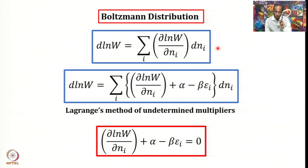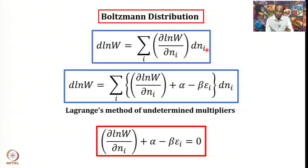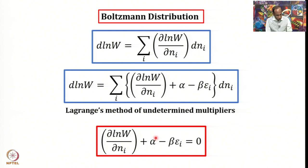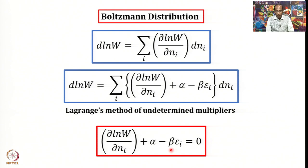This is an important step of the recap. We set the derivative of log W equal to zero. However, we cannot simply treat either the bracketed term or dNi equal to zero independently, because they are not independent of each other. Then we brought in a very important method: Lagrange's method of undetermined multipliers. In that method, you choose two parameters, alpha and beta, and transform the equation so that the bracketed term, along with alpha and beta*Ei, can be taken equal to zero. You then find the expressions for alpha and beta for which this condition holds.